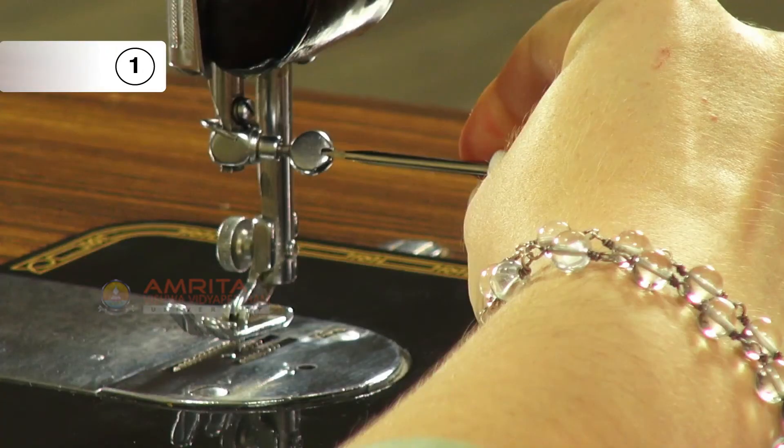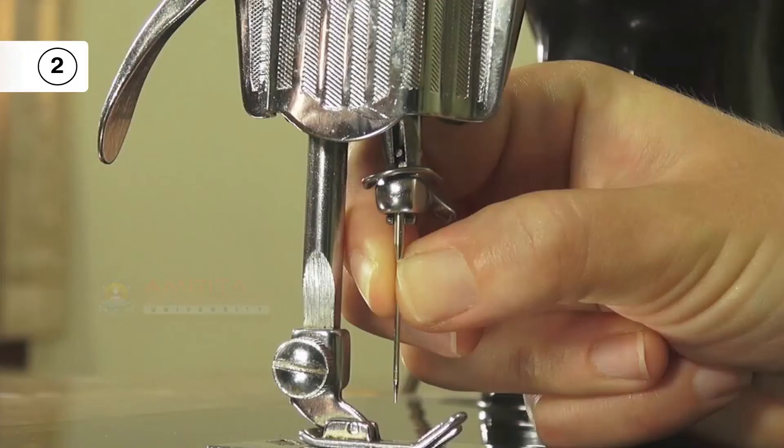Step 1: To insert a machine needle, first loosen the needle clamp screw with a screwdriver.